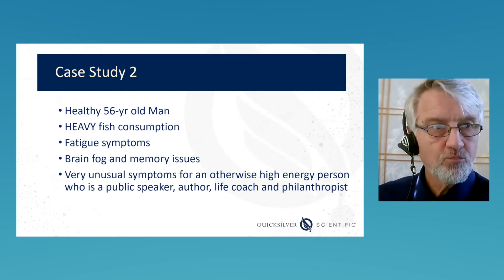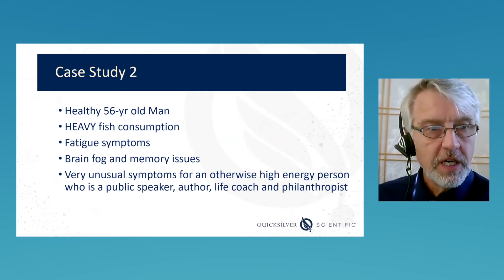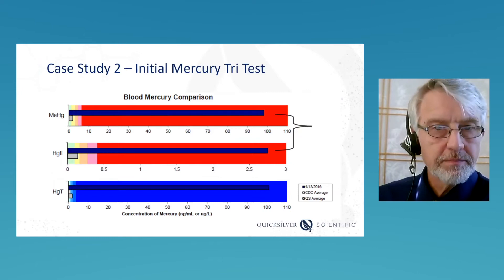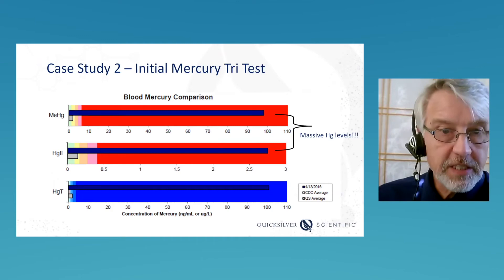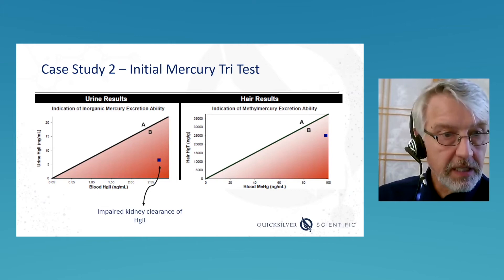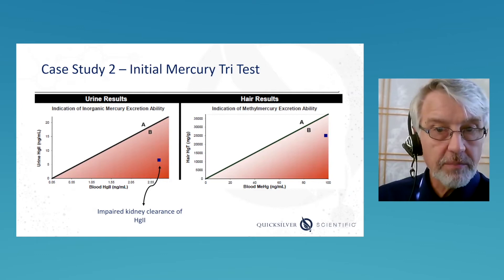Case two: a healthy 56-year-old man, heavy fish consumption, fatigue, brain fog, memory issues — unusual symptoms for an otherwise high-energy person, public speaker, author, life coach, philanthropist. He had massive mercury levels — a very severe toxicity. The excretion showed impaired kidney clearance of inorganic mercury, quite compromised — you don't often see it that bad — and poor bile clearance of methylmercury.